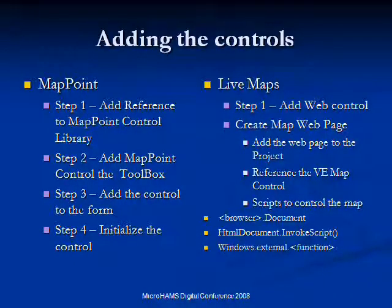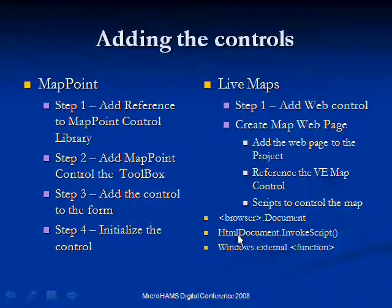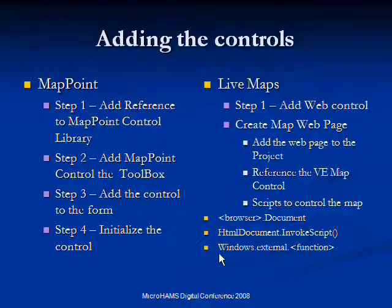For Live Maps, we put a web control on, then create the map web page, which is an HTML page, and browse the document and invoke some scripts. Two key functions here are HTML document dot InvokeScript — which from Windows allows me to execute a script in the browser — and in the browser, calling Windows.external allows me to execute a function in Windows from the browser. That's how you link the browser and Windows together with the API.